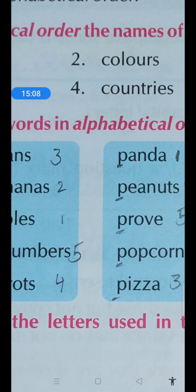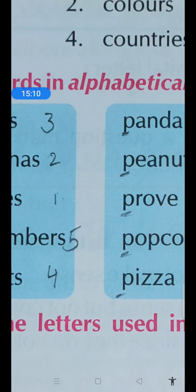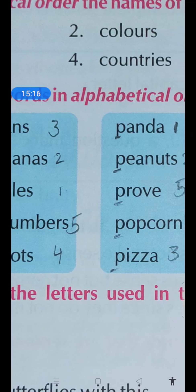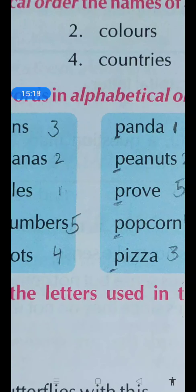Now, the next example. In this, we have all the words started with P. All words start with P. But don't worry about this. We know the rule. We have to just focus on the second letter. Focus on the second letter. A, E, R, O, I.